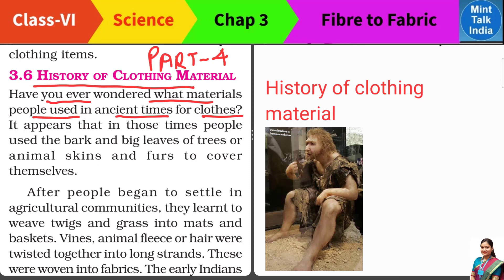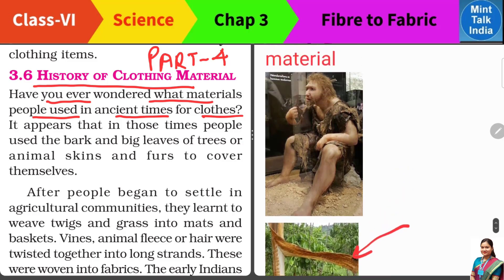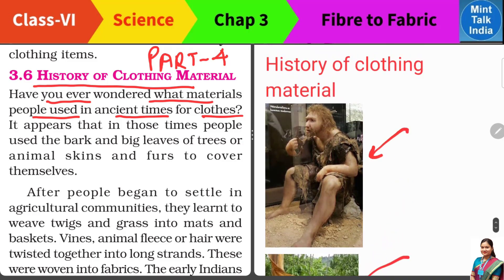फिर जब उन्होंने animals को देखा कि उनको तो सर्दी नहीं लगती, क्योंकि उनके body पे उनकी skin के ऊपर एक type की covering है। जब वो animals को hunt करते थे, उन्हें वो skin निकालने को मिलती थी। जब वो पेड़ों से fruits और vegetables खाते थे, तो उन्हें पेड़ों से भी एक अलग type का cover मिलता था — एक मोटा सा cover जिसे हम bark of the tree कहते हैं। तो वहीं से Stone Age वाले people को idea आया कि क्यों न हम भी अपने body को cover करने के लिए इस तरह के clothes बनाएं — and that was the beginning of the clothing material.